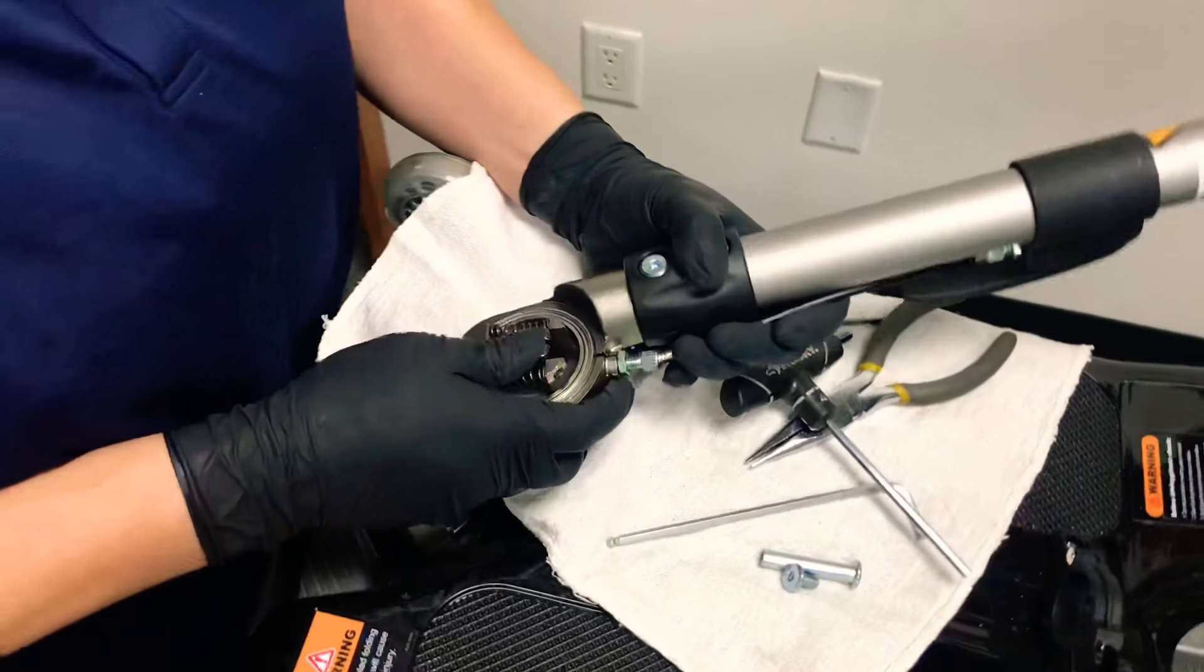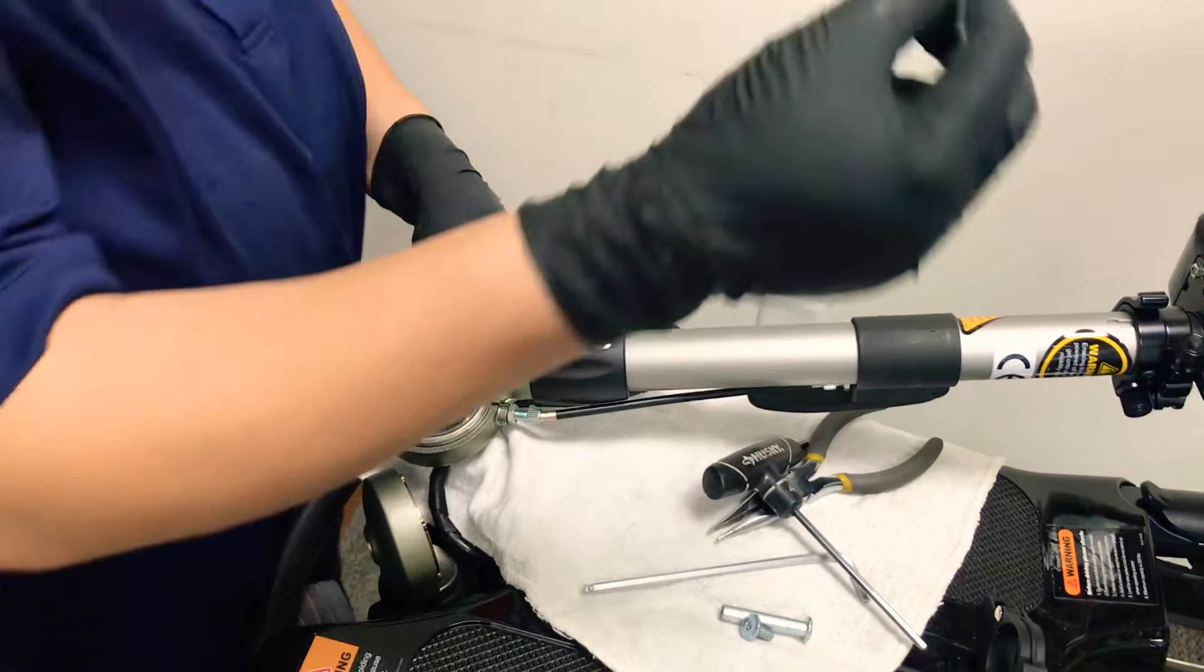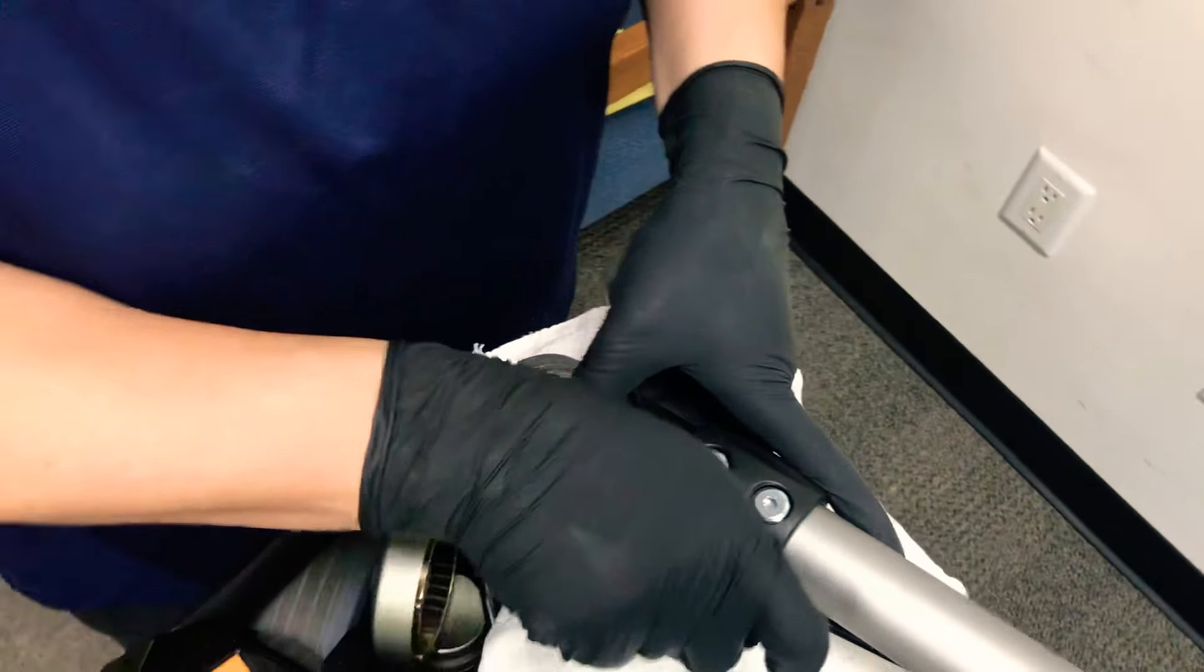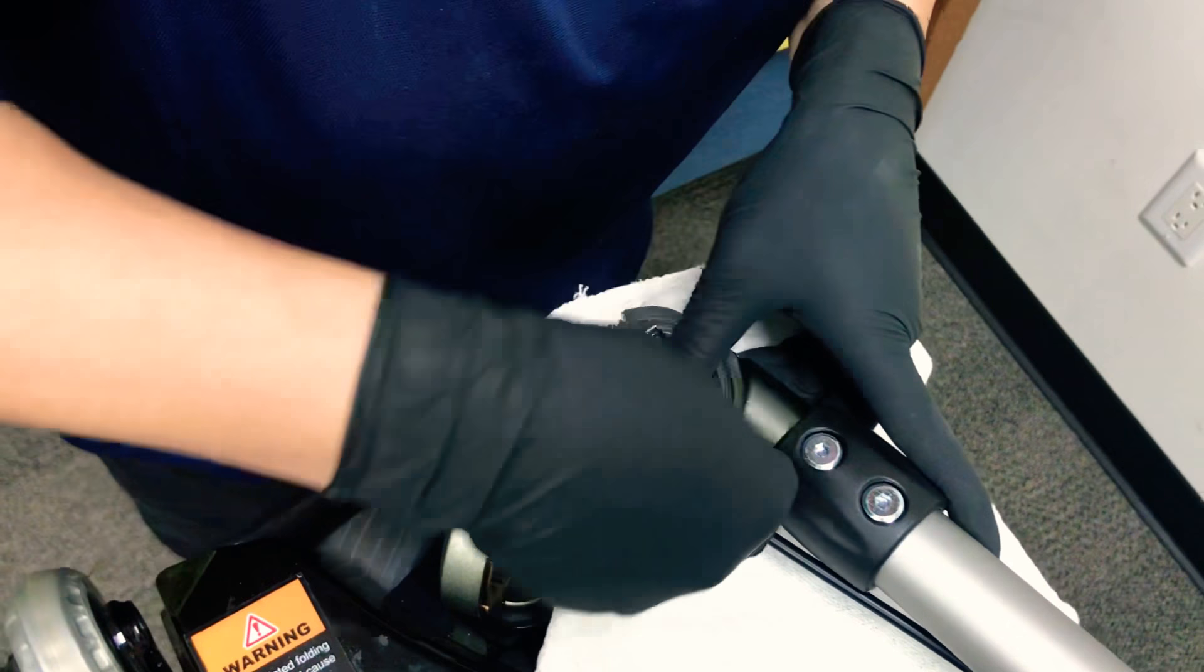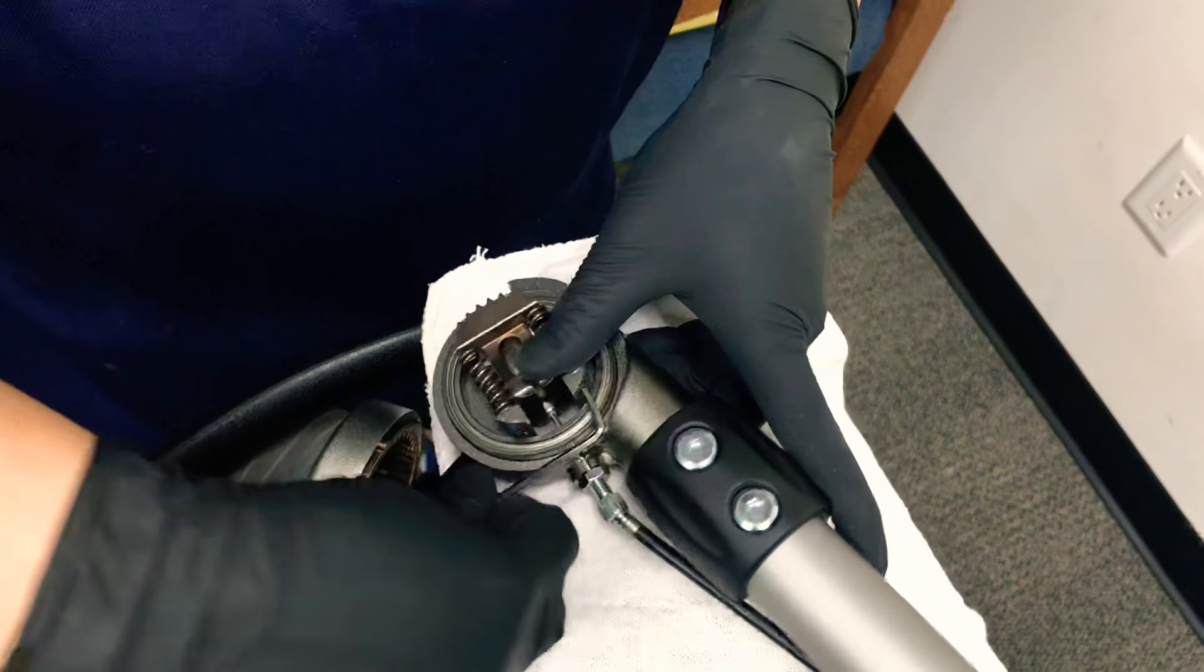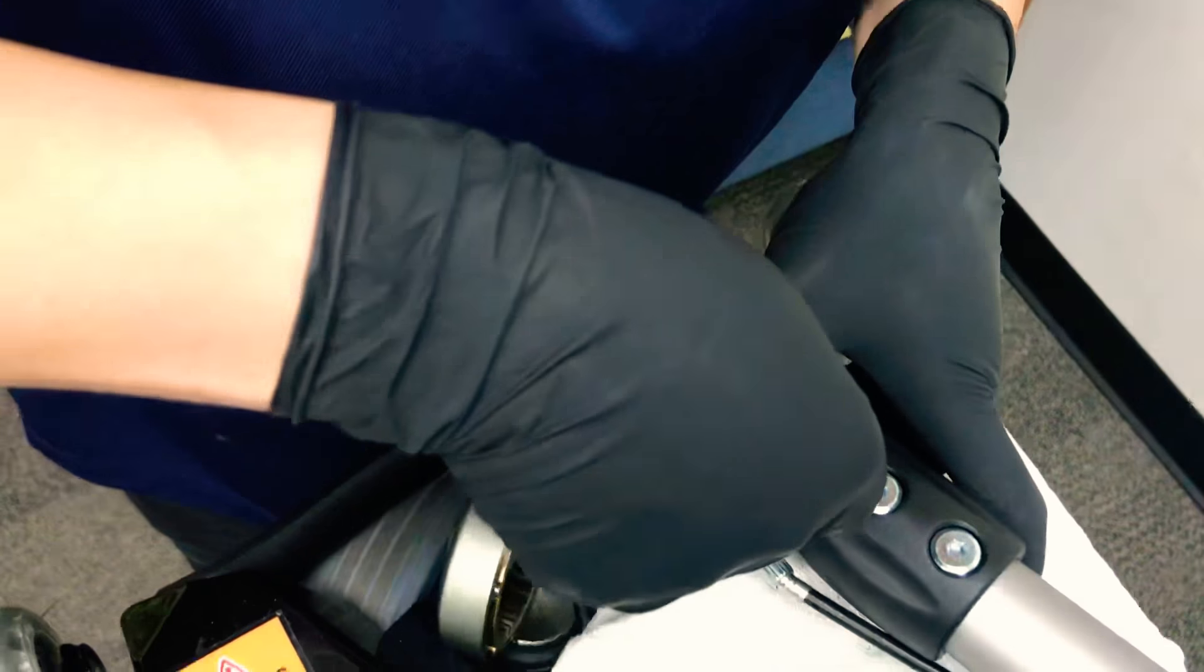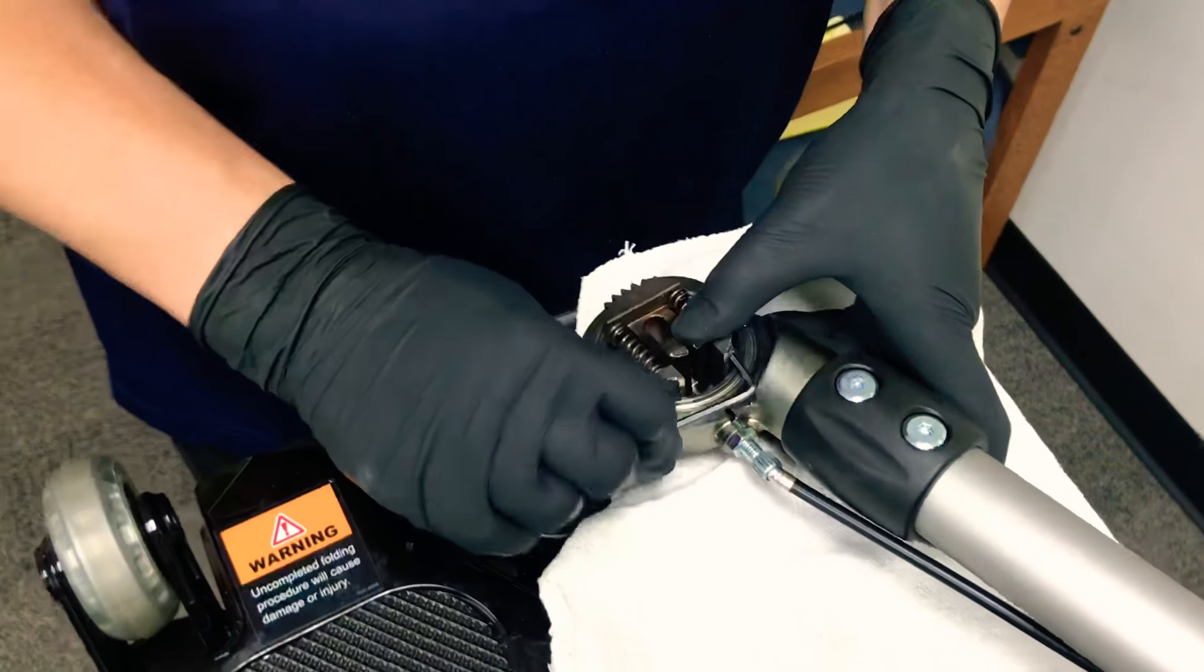Now to take out the gear, first get the size 3 allen wrench and loosen the screws. You don't have to remove them all the way, just make sure you can't see them from the bottom. Take that side out. It's a little difficult because you have limited space, but it is doable.